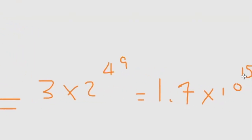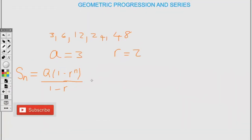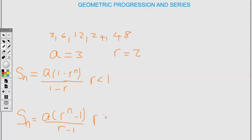When finding the sum of a geometric series, we have two formulas. The first is used when R is less than 1, and the second is used when R is greater than 1. Depending on the value of the common ratio, we choose the appropriate formula.